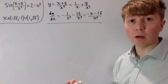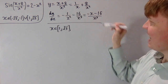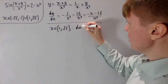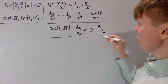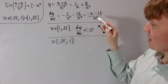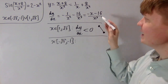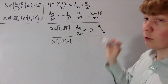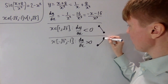In the first region where x is between 1 and root 3, the numerator (minus x minus 16) is negative and the denominator x cubed is positive, so dy/dx is strictly negative — a strictly decreasing function. In the second region where x is between minus root 3 and minus 1, the numerator is still negative (since x doesn't reach minus 16), but the denominator is a negative cube, so dy/dx is strictly positive — a strictly increasing function.